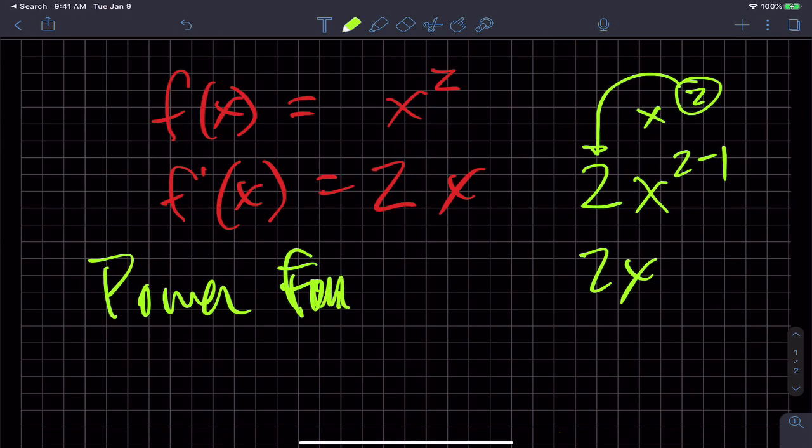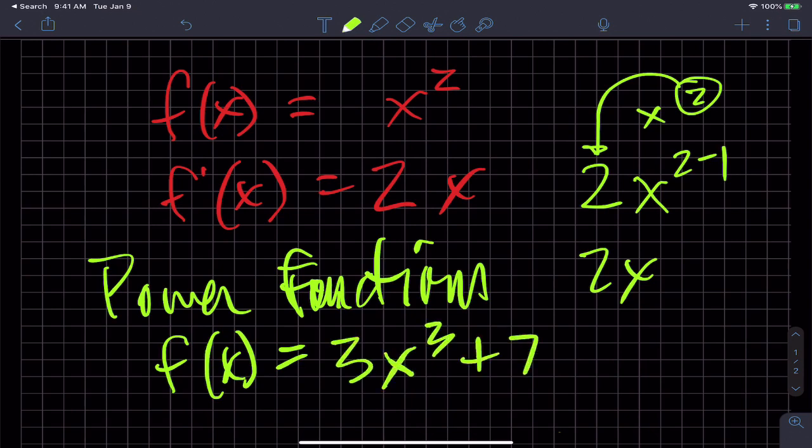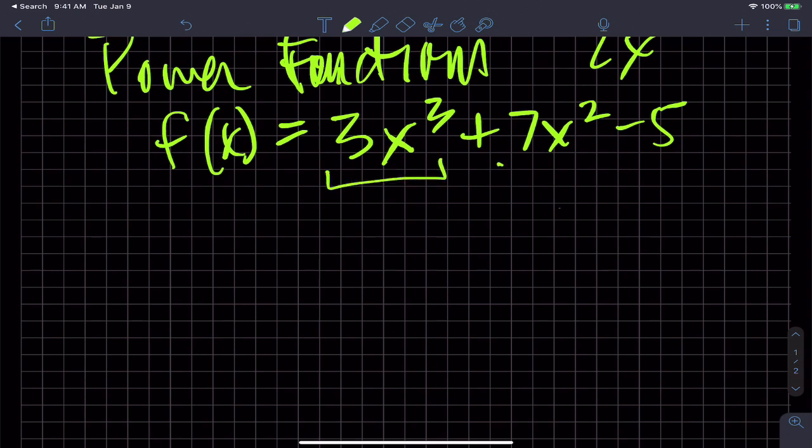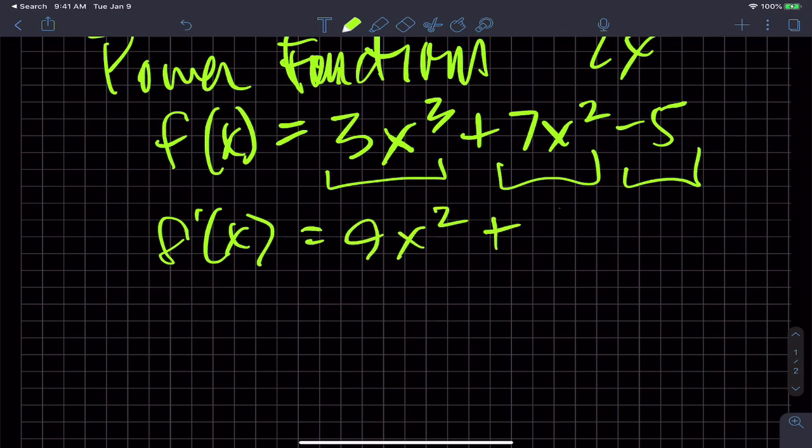And if I have a bunch of power functions strung together, 3x cubed plus 7x squared minus 5, I can treat each one of them as a separate power function and take their derivatives. So the derivative of this is three times three is 9x squared plus 14x and minus five becomes zero. So here's my derivative of this particular function.